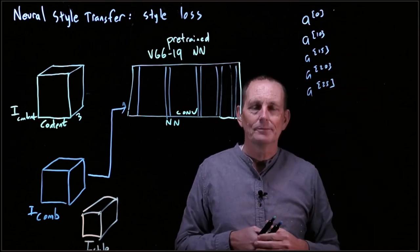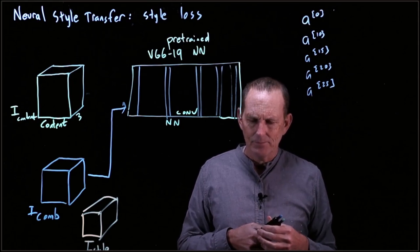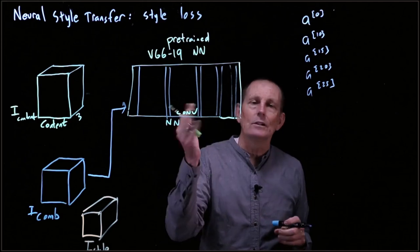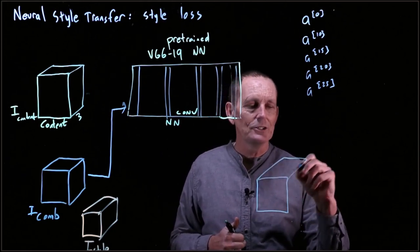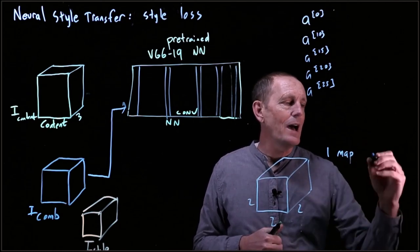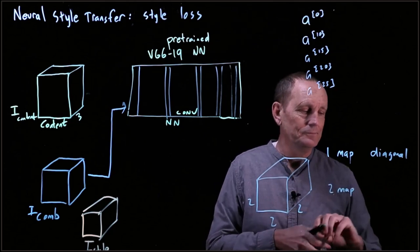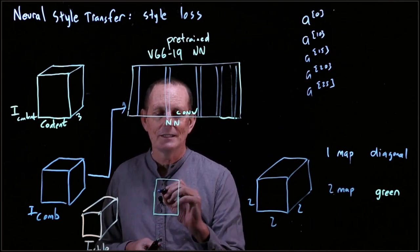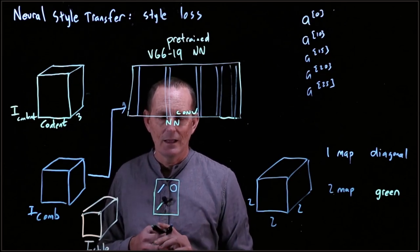We still need to figure out how to extract a concept of style. Let's use a simple demonstration. Suppose we have a small neural network with a two-by-two-by-two output: the first feature map tells you whether you have a diagonal line, and the second tells you whether you have green. The input image has a diagonal line, a circle, a green diagonal line, and a green circle.